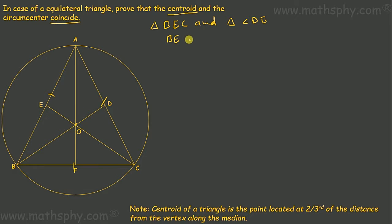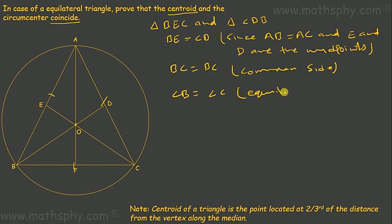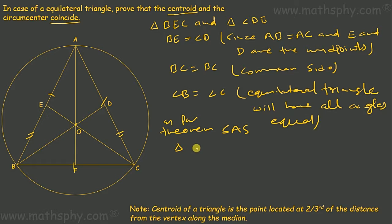In these two triangles, BE is equal to CD, since AB is equal to AC and E and D are the midpoints. BC is the common side for both triangles BEC and CDB. Also, angle B is equal to angle C, because in an equilateral triangle all angles are 60 degrees, so they are all equal. We now have two sides BE equal to CD, BC as the common side, and angle B equal to angle C.